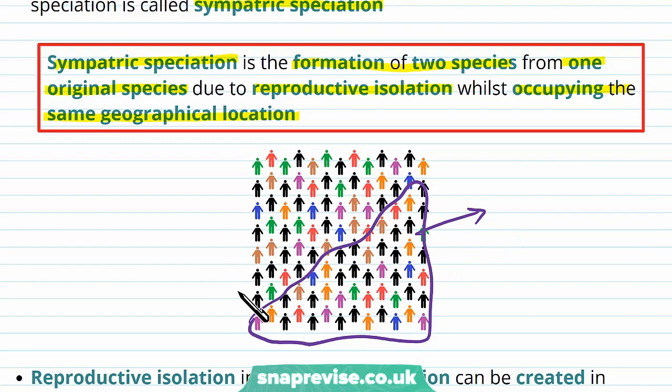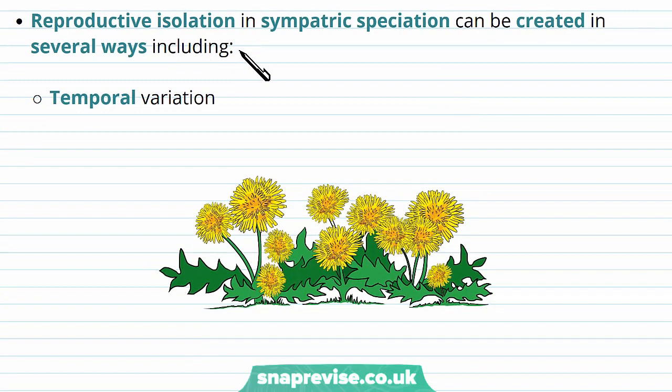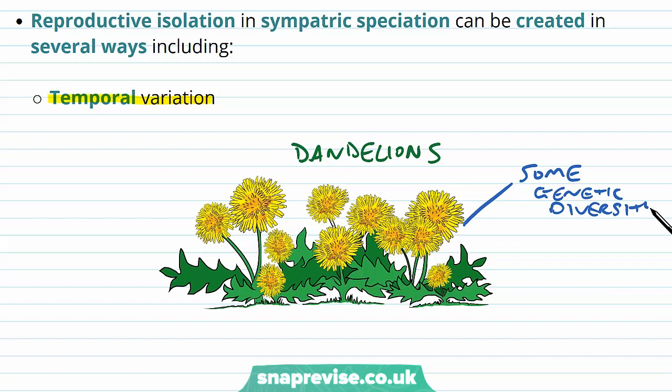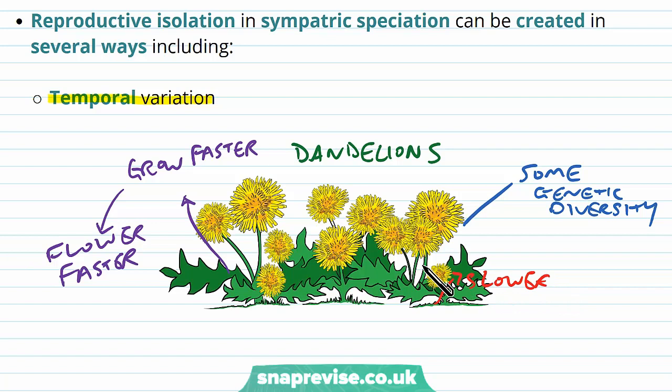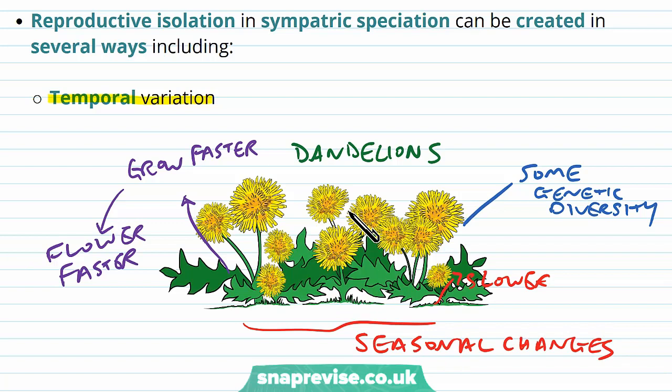Sympatric speciation can occur in several ways. First, there is temporal variation. For example, a group of dandelions all in the same population and the same area will have some genetic diversity, because all organisms in a population are unique. Some of them may grow and flower faster, while others have genes that make them grow slower and therefore flower much later. Over a few generations, the slower-growing ones may never be able to reproductively produce offspring with the faster-growing ones, so they must be classed as two separate species.